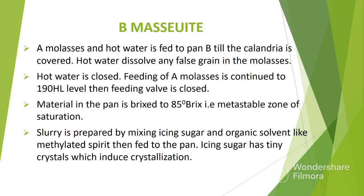Number one, A molasses and hot water is fed to pan B until the calendria is covered. The function of hot water is to dissolve any false grain in the molasses. Next, hot water is closed. Then feeding of A molasses is continued up to around 190 hectolitres, then stopped. Material in the pan is brixed to 85 degrees brix.